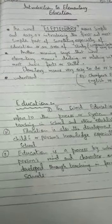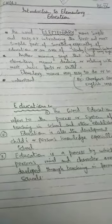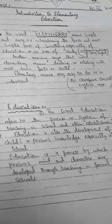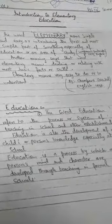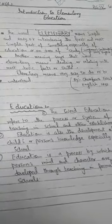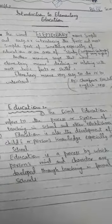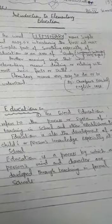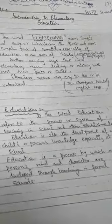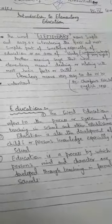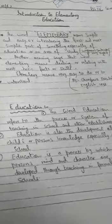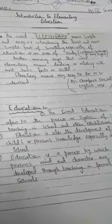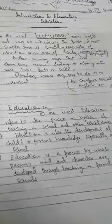Let's start from the first topic: Introduction to Elementary Education. Here we will study the terms 'elementary' and 'education' so you will be very clear about the elementary level. The word 'elementary' means simple and easy, or introducing the first and most simple part of something, especially of education or an area of study. This definition is from Longman's dictionary. It also means dealing with the most basic facts or skills — very easy to do or understand.